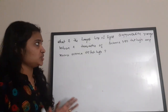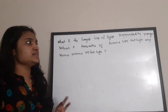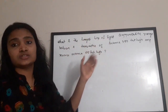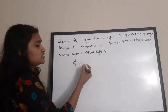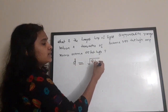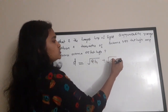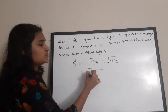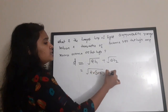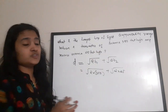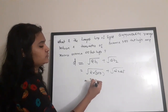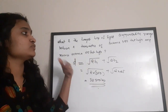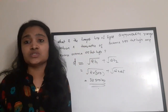Next question: what is the longest line-of-sight communication range between a transmitter antenna height of 350 feet and a receiver antenna height of 250 feet? The equation is: d = √(2h₁) + √(2h₂). Substituting: d = √(2 × 350) + √(2 × 25) = 33.5 miles is the longest possible distance.